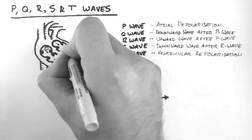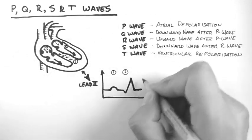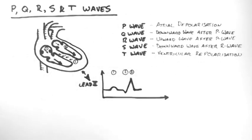Atrial repolarisation occurs about this time, but is overshadowed by the large amount of electrical activity occurring in the ventricles.